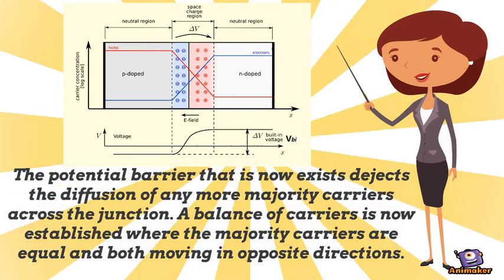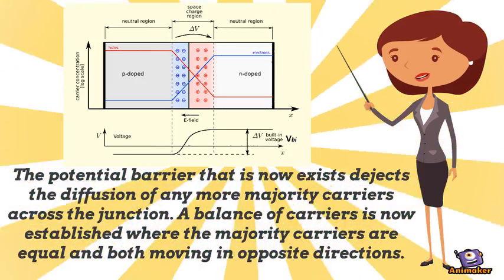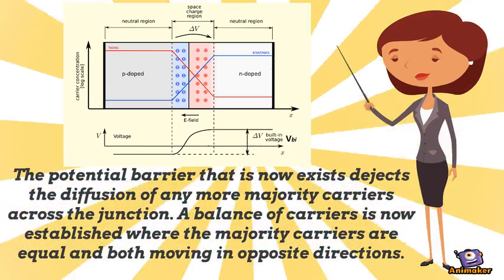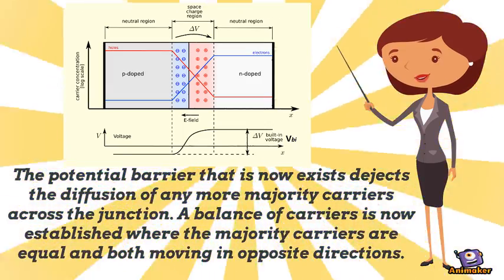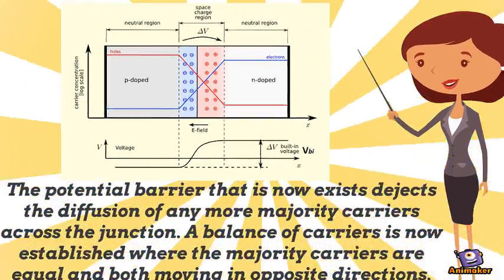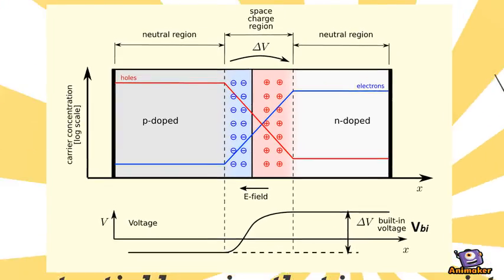The potential barrier that now exists rejects the diffusion of any more majority carriers across the junction. A balance of carriers is now established where the majority carriers are equal and both moving in opposite directions.